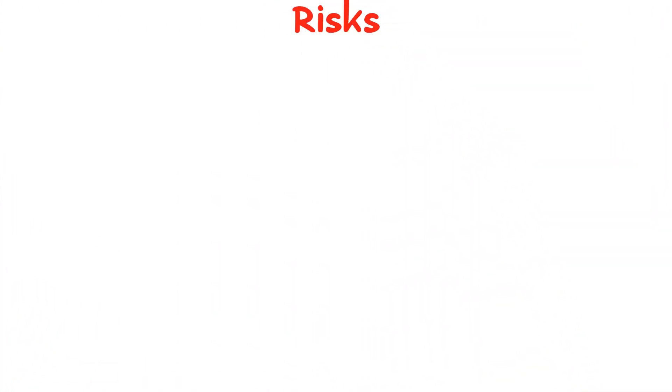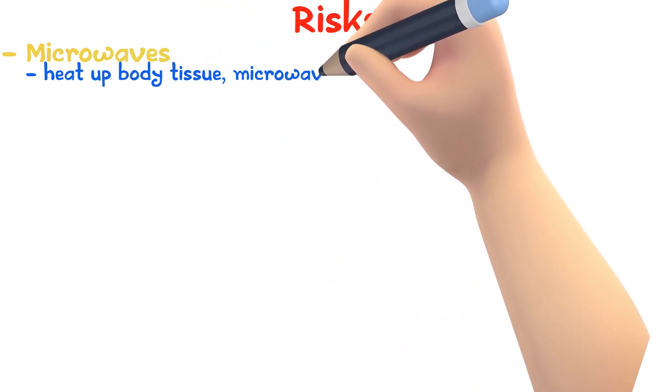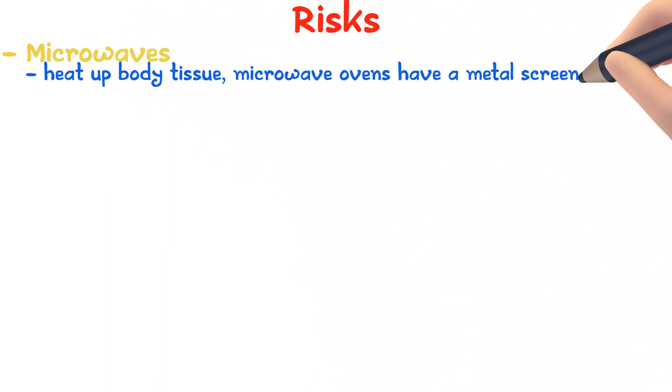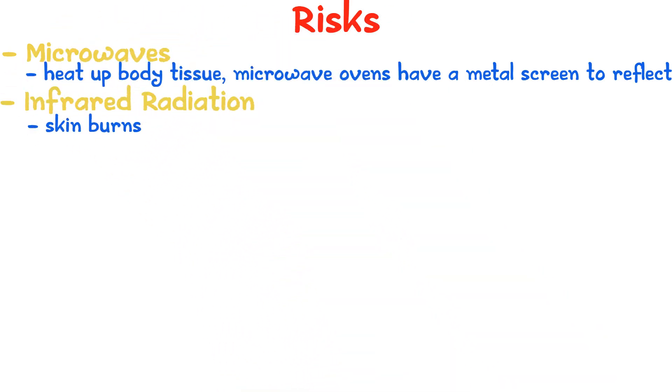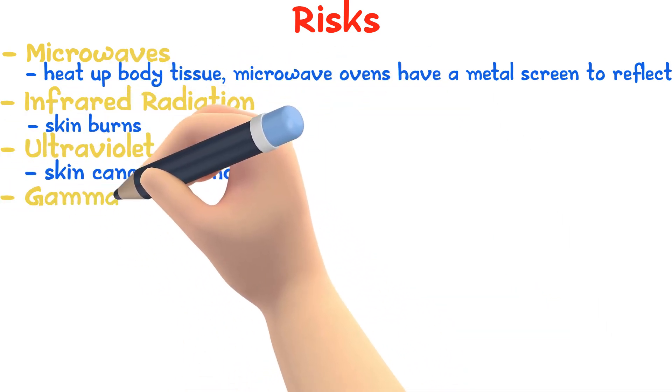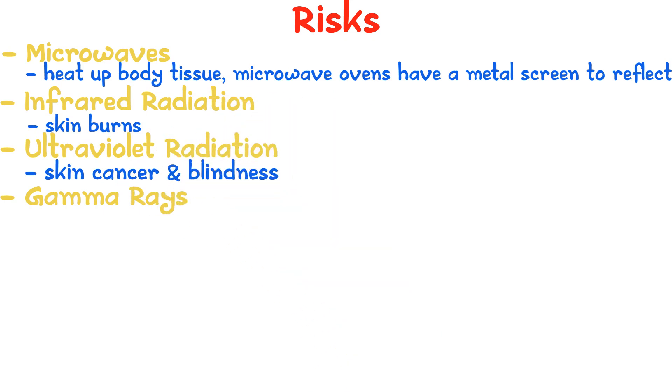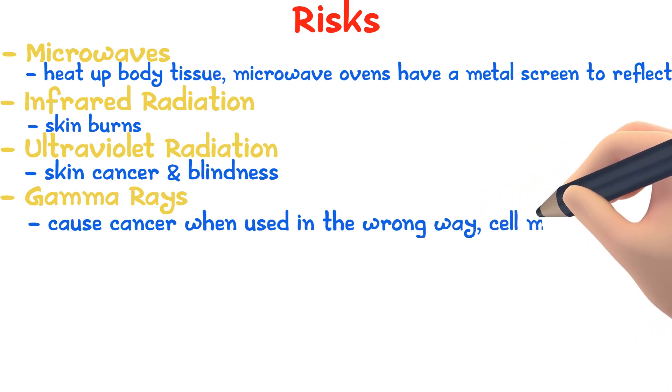Some of the waves in the electromagnetic spectrum could be detrimental if exposed too much. Microwaves could heat up body tissues, which is why microwave ovens have a metal screen to reflect the waves. Overexposure to irradiation could cause skin burns. Exposure to ultraviolet radiation could lead to skin cancer and blindness. Gamma rays, although they can be used to cure cancer, can also cause cancer when used in the wrong way or could cause cells to mutate.